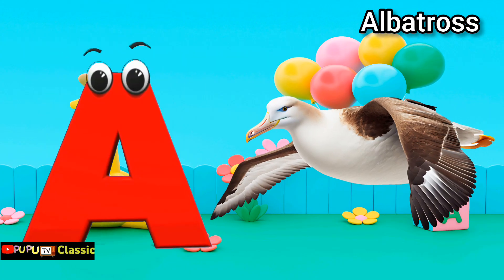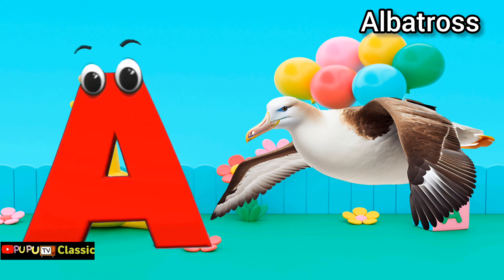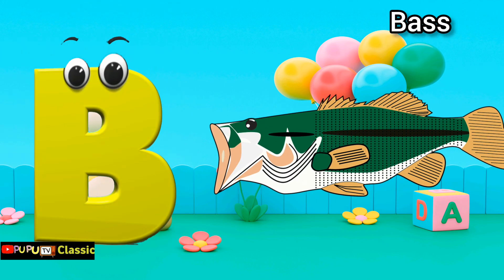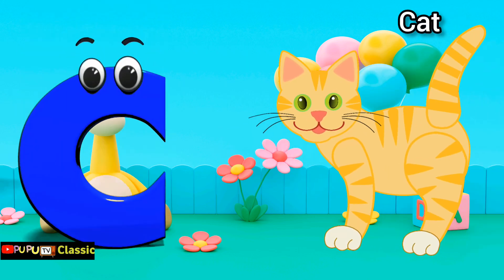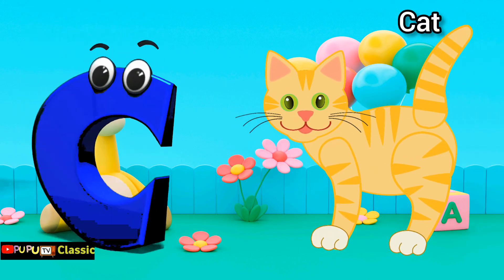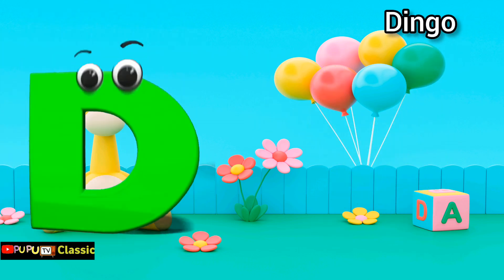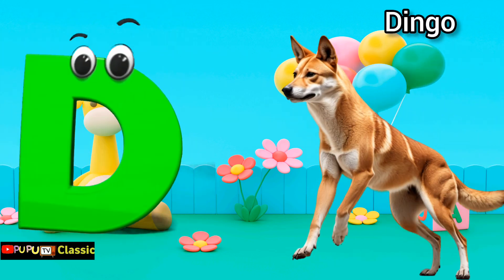A is for Albatross. B is for Bear. C is for Cat. D is for Dingo.